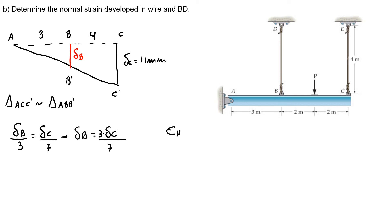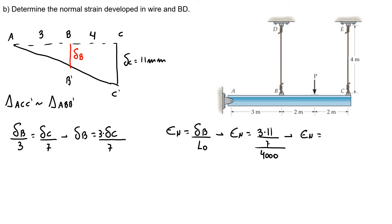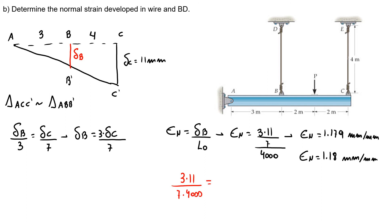Applying the strain equation — displacement in B over the original length — my normal strain is (3 times 11 over 7) divided by 4000 mm. Doing the math, the normal strain is 1.179 mm per mm. Using 3 significant figures, the strain is 1.18 mm per mm. Remember: 3 times 11 over 7 times 4000 is where we get 1.179 mm per mm.